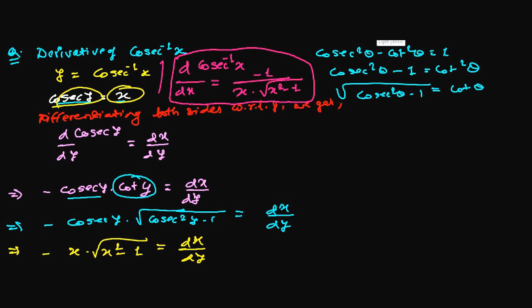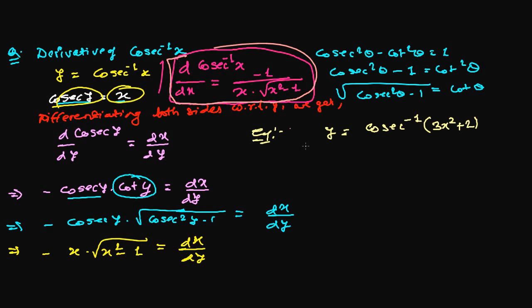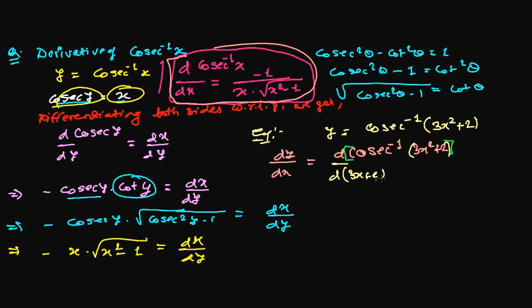Let's take an example. Suppose I have a function y equals cosecant inverse of 3x squared plus 2. I'm going to use this result to find the derivative. So dy over dx equals the derivative of cosecant inverse of 3x squared plus 2 with respect to its angle, which is 3x squared plus 2, times the derivative of that angle, 3x squared plus 2, with respect to x.